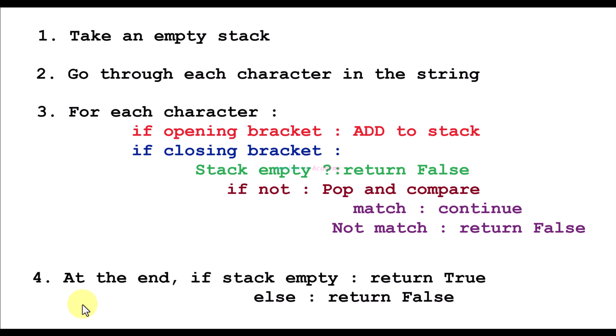After completing this process, if the stack is empty we return true — it is a valid string. If the stack is not empty, the given string is not valid, because after comparing all the characters, if the stack still contains some elements that means the closing and opening brackets are not balanced. Let's take an example and see how it works.